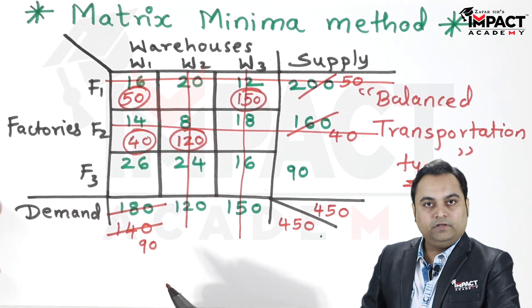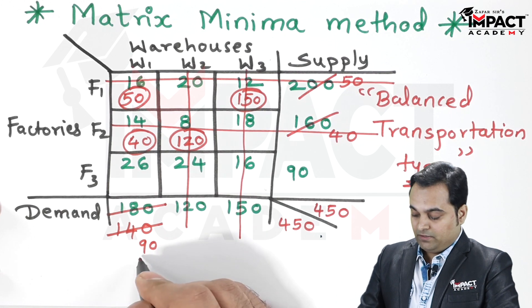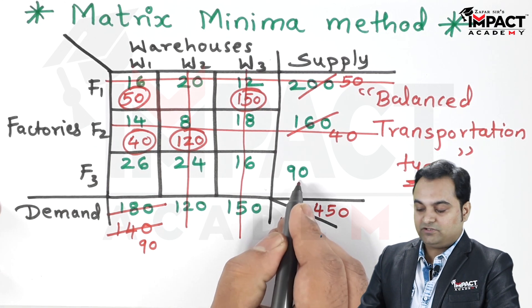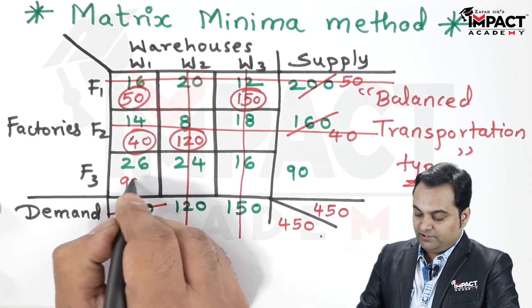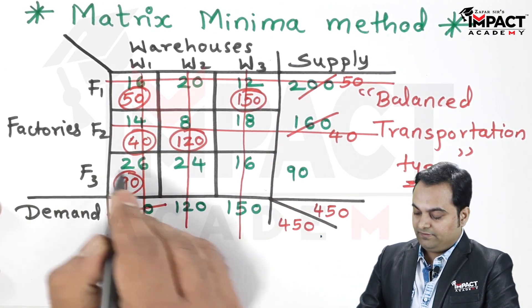Next, only a single cell remains here having unit cost 26. The demand is 90 and supply is also 90, so the demand can be completely met. Cancel this entire column and supply is also completed.